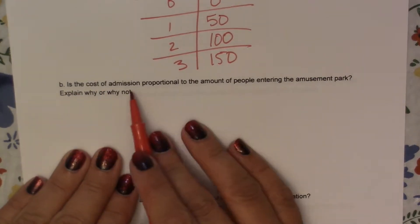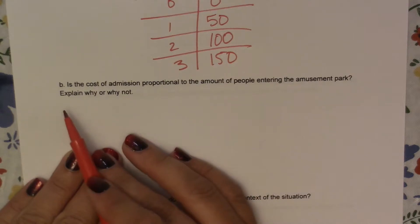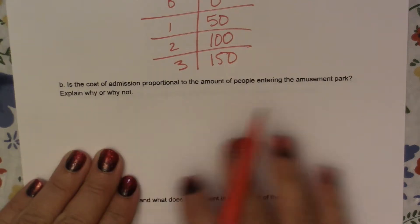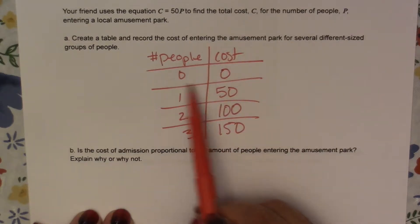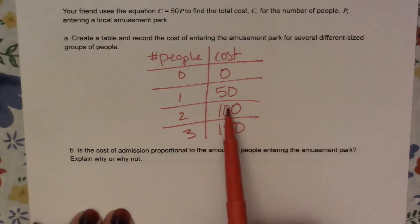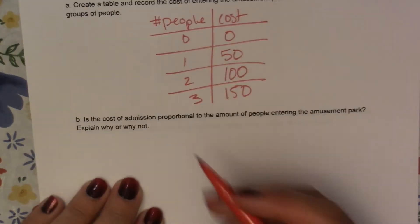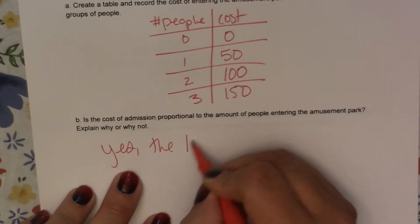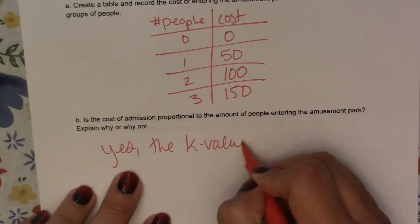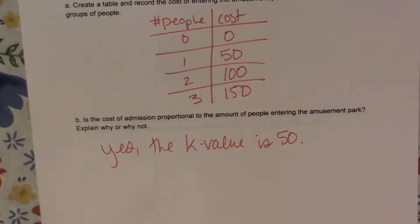Is the cost of admission proportional to the amount of people entering the amusement park? Explain why or why not. So if I go up to my table and I divide out, it goes through 0, 0. And if I take my y divided by my x, I get that constant of 50. So yes, the k value is 50, so every person pays the same amount.